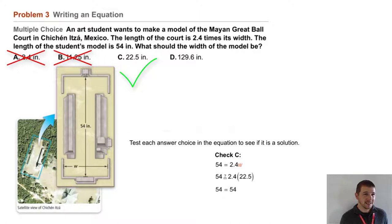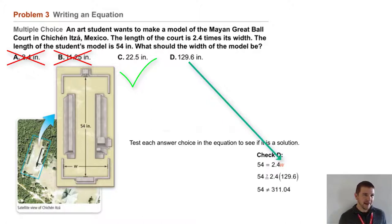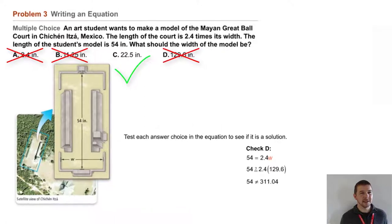But for good measure we should check choice D and eliminate that one as well, make sure we're correct and didn't make any mistakes. So we substitute in 129.6 for our variable W, multiply that by 2.4, and we get 311.04, which is definitely not equal to 54. So the correct answer is C.